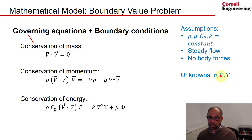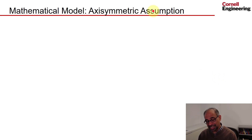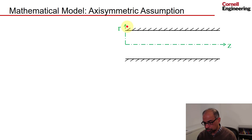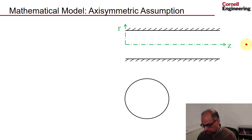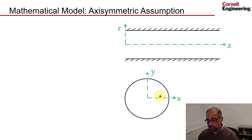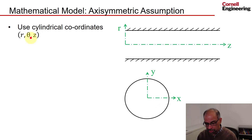The unknowns are pressure, velocity, and temperature. Since velocity is a vector, we need to think about its components. For a 3D problem we'd have three components, but we reduce it to a 2D problem by making the axisymmetric assumption and switching to the cylindrical coordinate system. In a cross-section through the pipe, z is the axial coordinate and r is the radial coordinate.